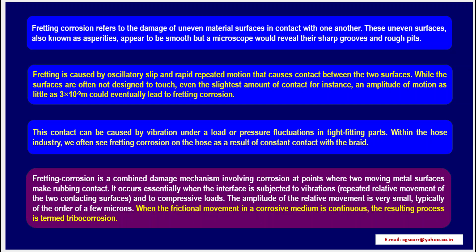Fretting corrosion refers to the damage of uneven material surfaces in contact with one another. These uneven surfaces, also known as asperities, appear to be smooth, but a microscope would reveal their sharp grooves and rough pits.